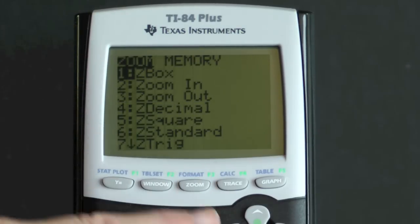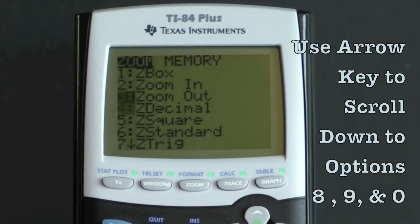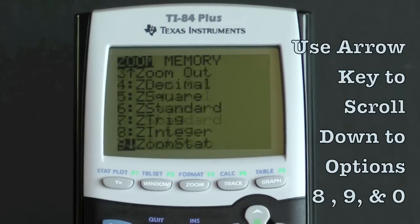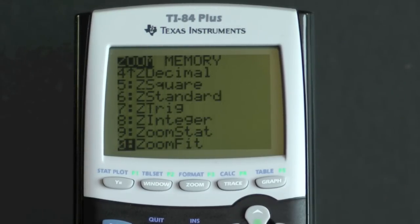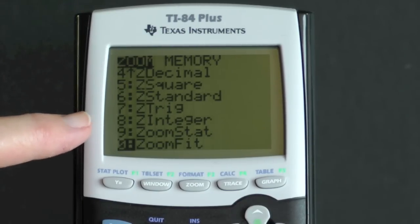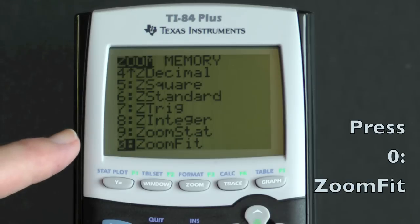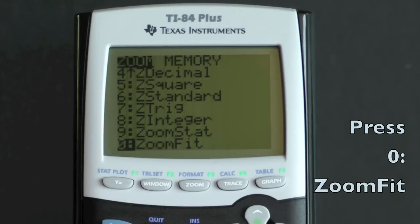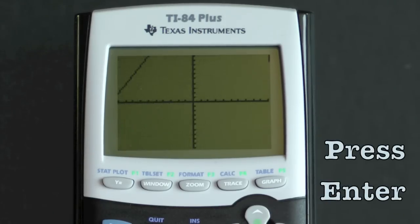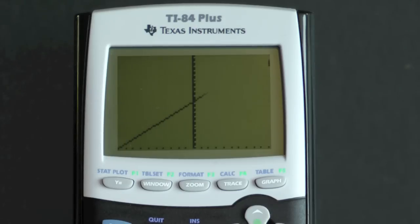Then scroll down to see numbers 8, 9, and 0. Options 9 and 0, zoom stat and zoom fit, are good buttons to experiment with when you're working with your zoom view. So go ahead and press 0, zoom fit, and that will redraw the graph bringing up the two lines and showing the intersection.